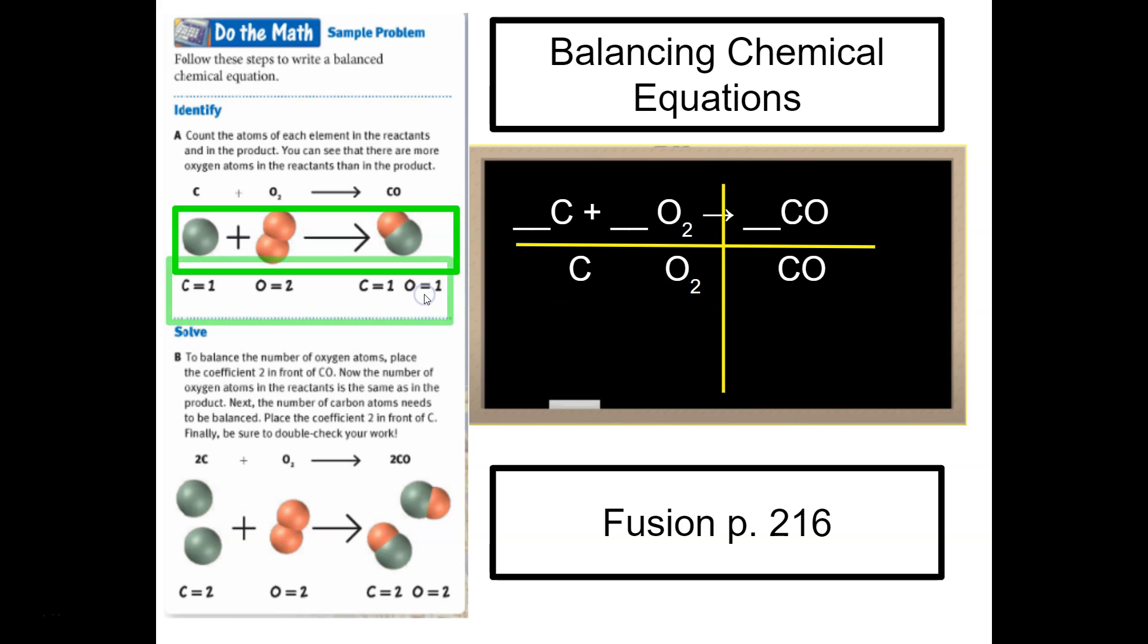What did they do next? They counted. They counted the different atoms in the molecules. So let's do that too. How many carbons? One. How many oxygens? Two. The subscript two tells us we have two oxygen atoms in one oxygen molecule. Here, on the product side, we have one carbon and one oxygen.